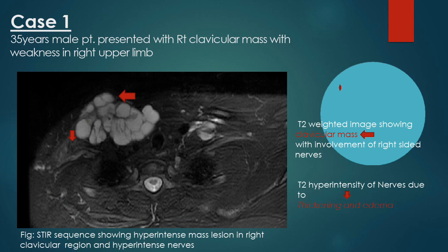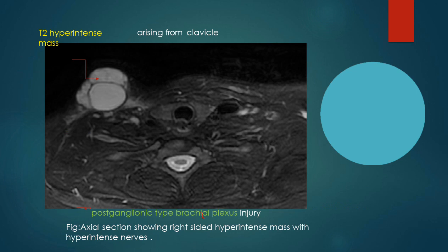Coming to the case discussion. Case one: a 35-year-old male presenting with a right clavicular mass with weakness in the right upper limb. The STIR image shows a hyperintense mass lesion in the right clavicular region with hyperintense nerve and edema. It is in the clavicular and infraclavicular part with T2-star hyperintensity and edema. The axial section also shows T2 hyperintensity with a mass arising from the clavicle. This is suggestive of postganglionic type of brachial plexopathy — prognostically favorable.